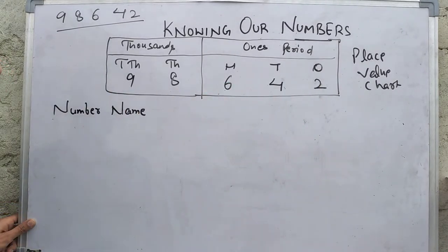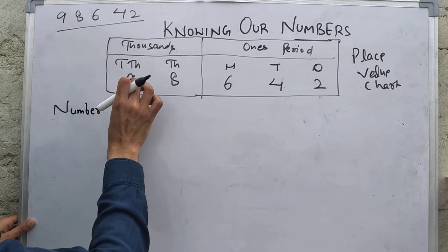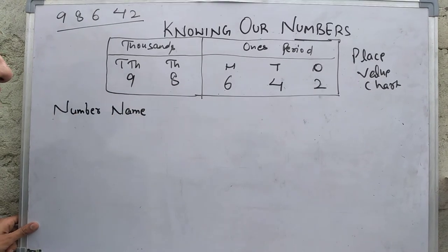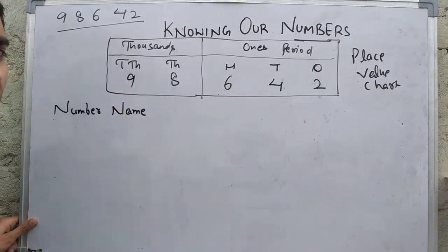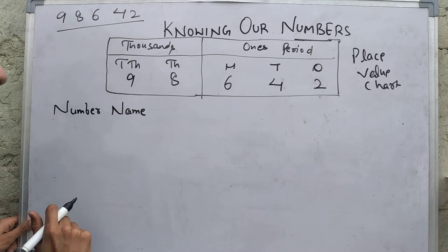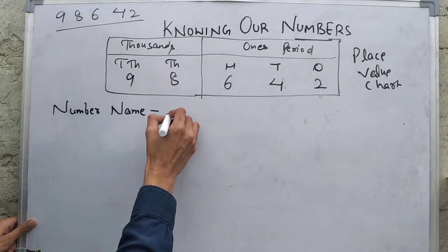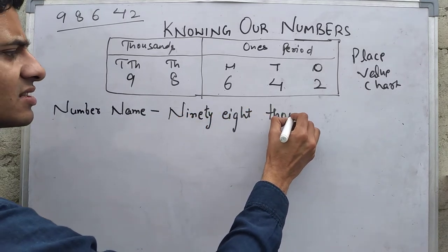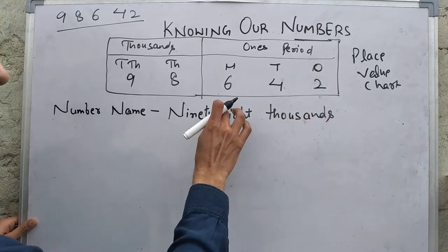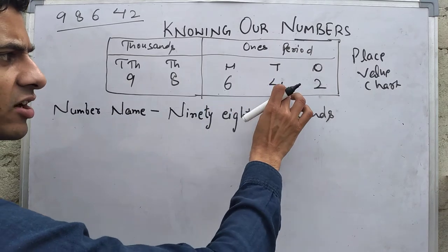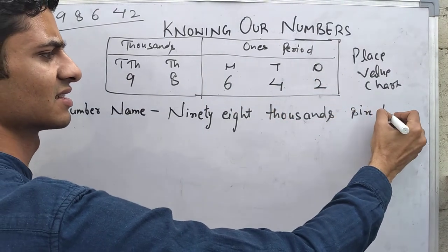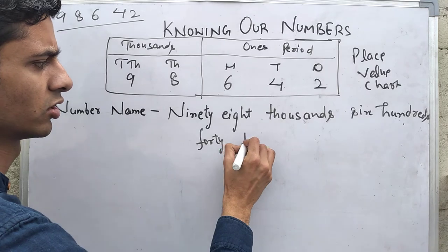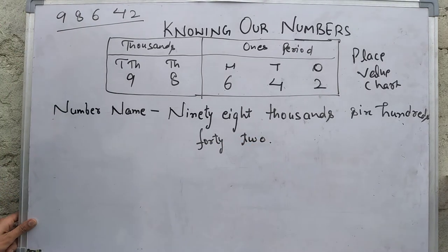This is the thousands period. What is there in the thousands period? You could say 90,000 and 8,000, but the better way is to say 98,000 — we read one period together and call it 98,000. Then for the ones period, we read together: 642. So the number name is 98,642. This is how you give a number name.